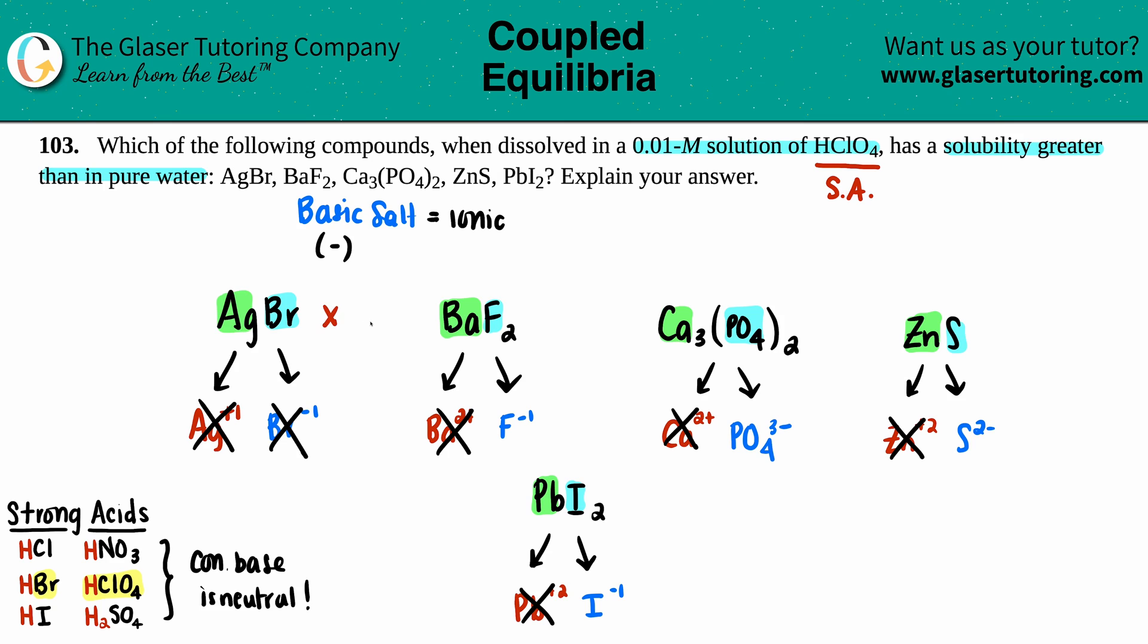AgBr does not have a solubility greater in HClO4. Let's go to the next one. We got F-. Do I see fluorine in my list of strong acids? No. So that means that this would actually be basic. F- comes from HF, which is a weak acid. Weak acids produce weak bases. So this is a big check.